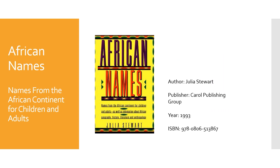Next we have African Names by Julia Stewart. This book differs from the last one in that the author separates names into male and female categories based on the sound of the name. There is a pronunciation guide and a definition for each. For example, Ada can be pronounced as Ada, Ada, or even Ida. Nigerians use the word for firstborn daughters. In Kiswahili it means fee, and it's also the name of a town in Ghana.